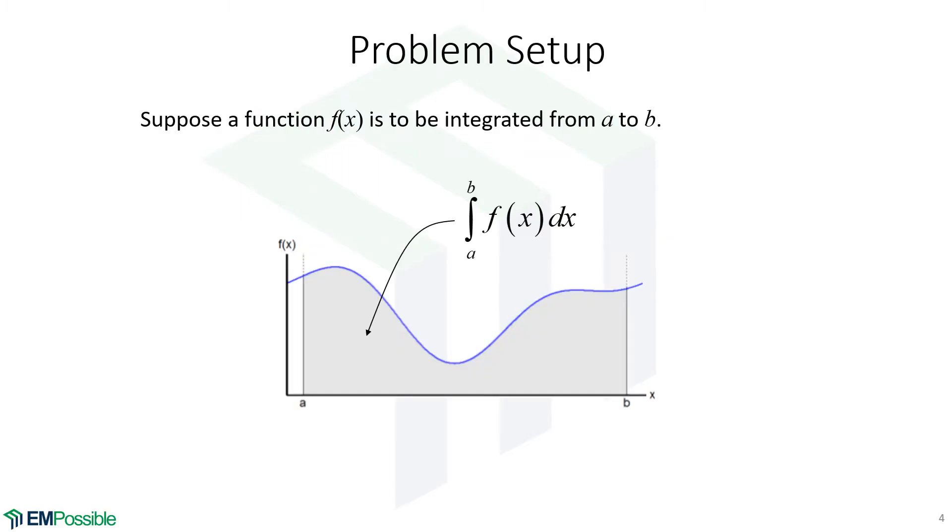We have the same setup that we had for discrete integration. We have some function f of x, and we want to integrate it from a to b. This is a definite integral, the area under this curve. This gray region is what we want to calculate.